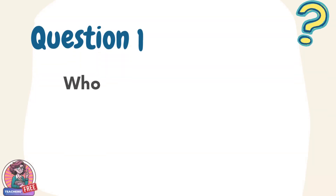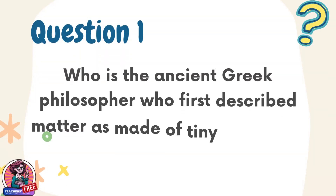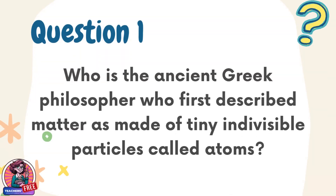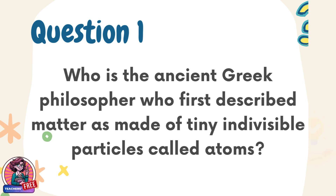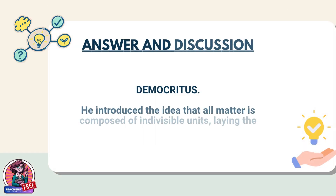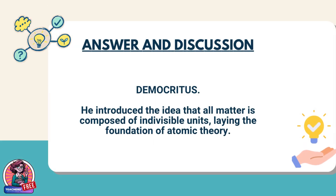Question 1. Who is the ancient Greek philosopher who first described matter as made of tiny indivisible particles called atoms? Answer: Democritus. He introduced the idea that all matter is composed of indivisible units, laying the foundation of atomic theory.